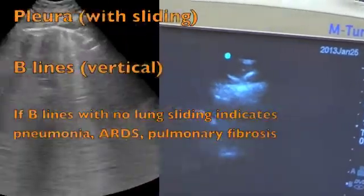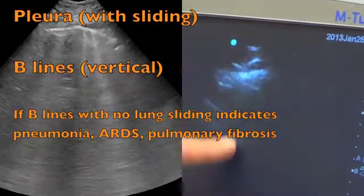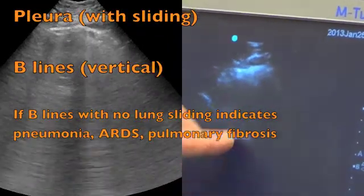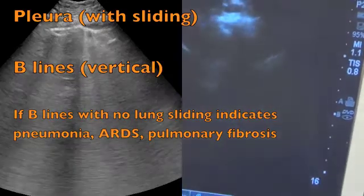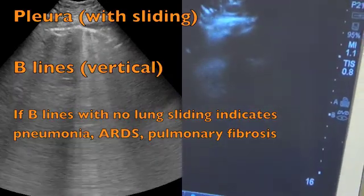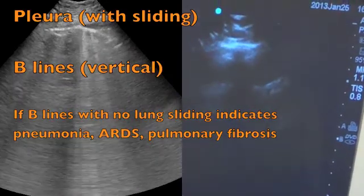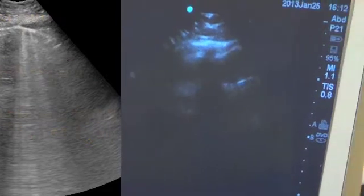B lines typically extend from the top of the screen all the way to the bottom. In pulmonary edema, you typically want to see two or more B lines on your view on each side to classify a B profile.